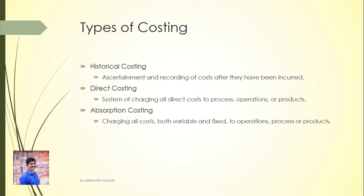What is historical costing? Historical costing refers to the ascertainment and recording of costs after they have been incurred. It records the actual costing on completing the job, process, or work order. It is a very simple process of collecting data of work done in the past. But this system is of little use for planning, controlling, and budgeting.